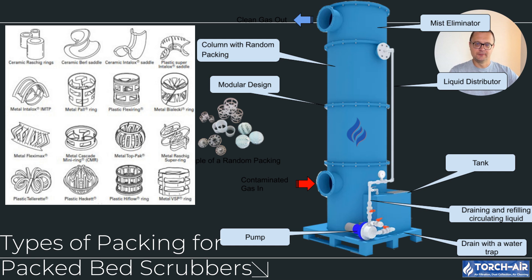Structured packing is where things get really high-tech. These consist of thin corrugated sheets of metal or plastic that are stacked in a specific arrangement, resulting in a very high surface area and excellent gas-liquid contact. Structured packing is ideal for processes that need high mass transfer efficiency, like those involving complex chemical reactions. It's efficient but it can be more expensive.